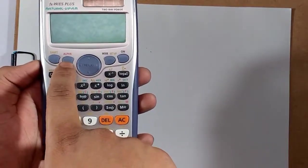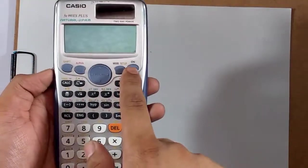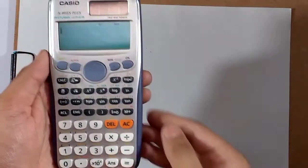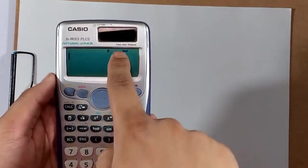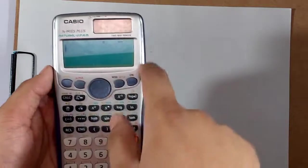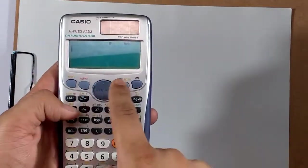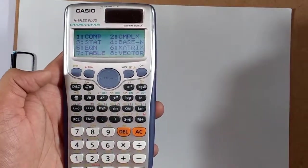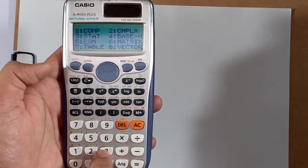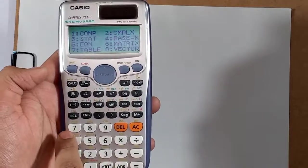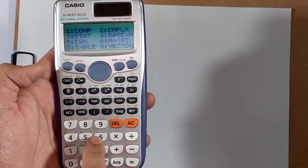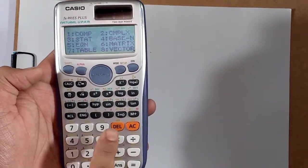Let's switch on this calculator and here we see Math, which means it is the math display. Now let's get into the mode. First is comp, second complex, third statistics, fourth is base N, fifth equation, sixth matrix, seventh is table, and eighth is vector.